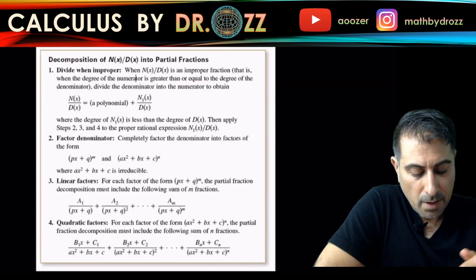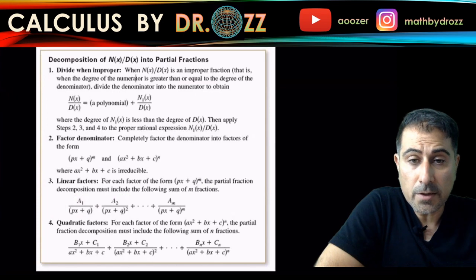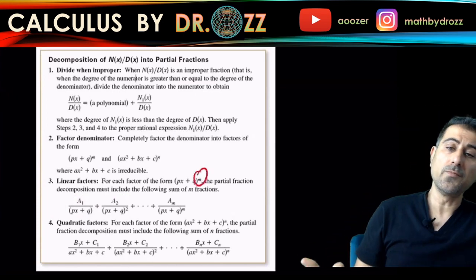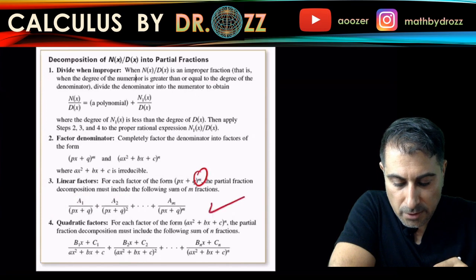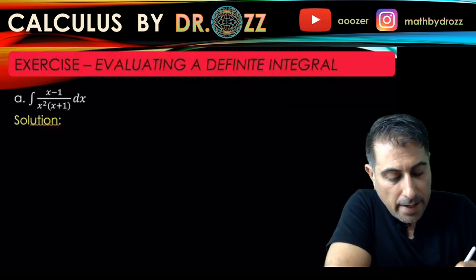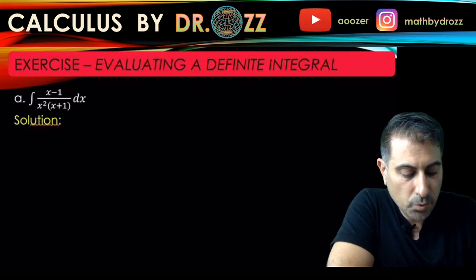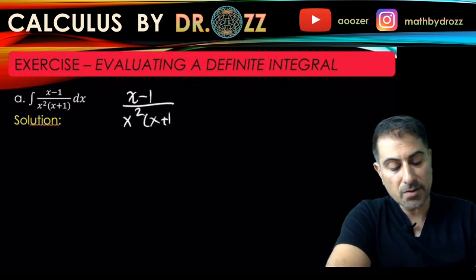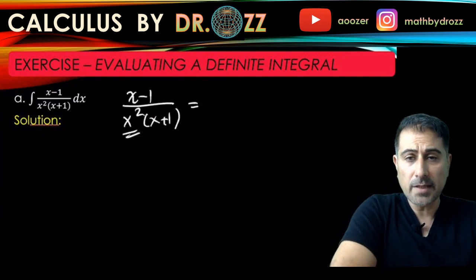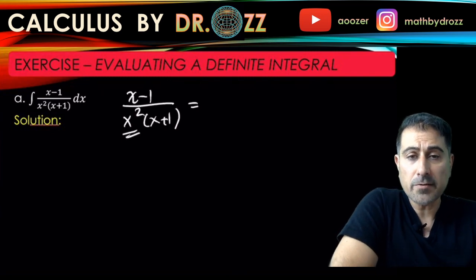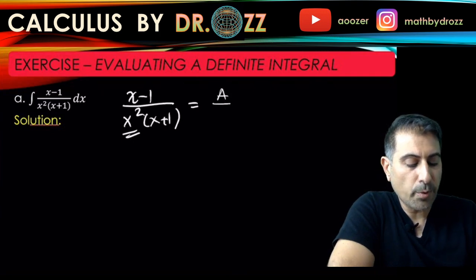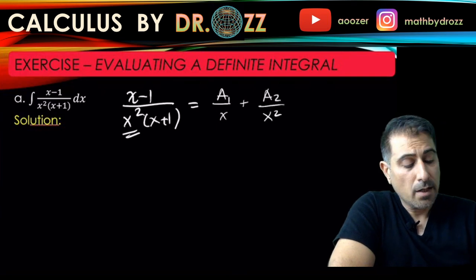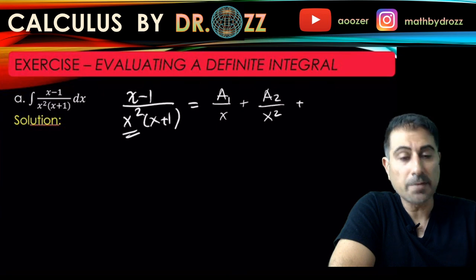So what I'm going to do now is to go back to the table that we had earlier and check how I can proceed. First of all, this is not improper, so the degree of the top is less than the degree of the bottom. Number 2 is not applicable because it's already factored. So I'm going to go with number 3, and all I care about here is the power of the factors. In one factor, I have power 2. In the other one, it's 1. So that means I'm going to use this strategy.